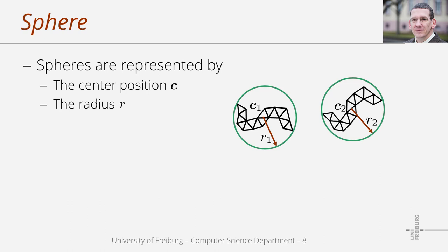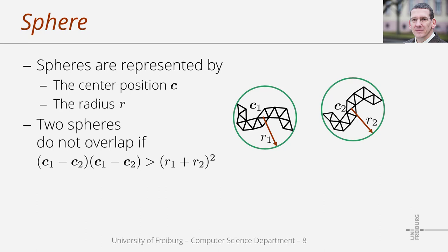The intersection test between bounding volumes should be simple. For spheres: a sphere is represented with its center position c and radius r. Two spheres do not overlap if the squared distance between the sphere centers is larger than the squared sum of the two radii.